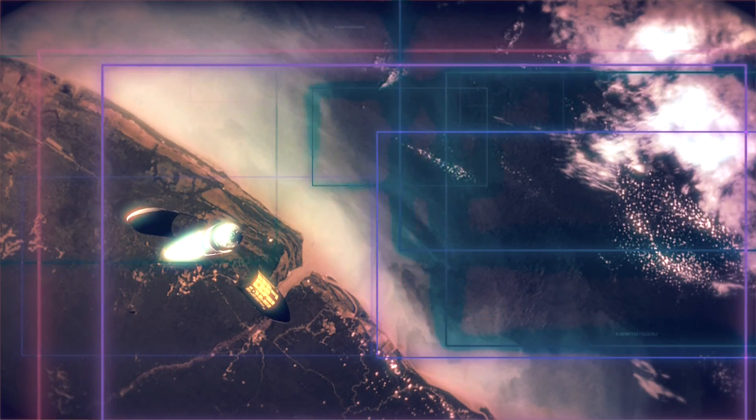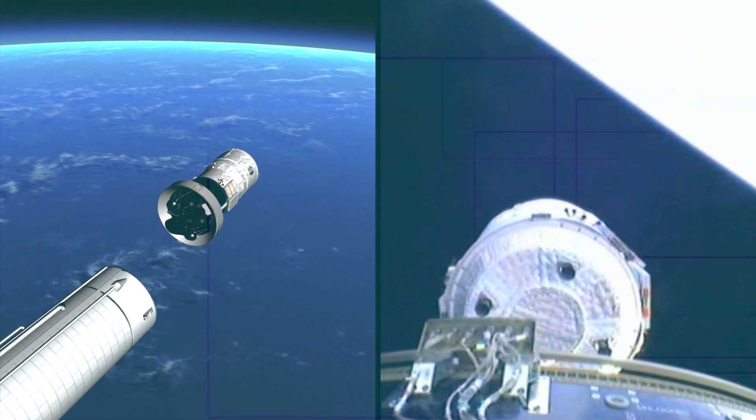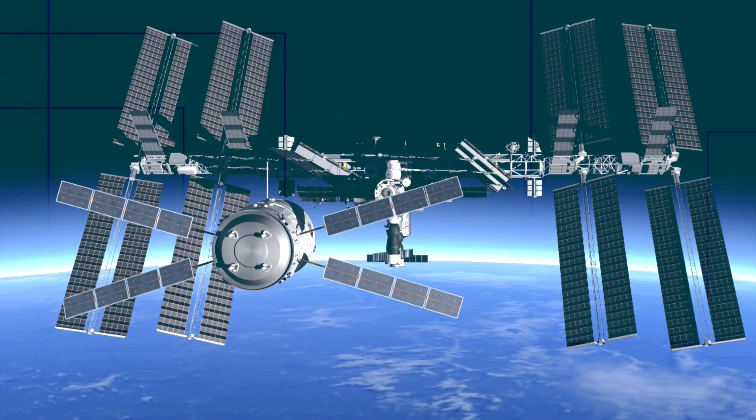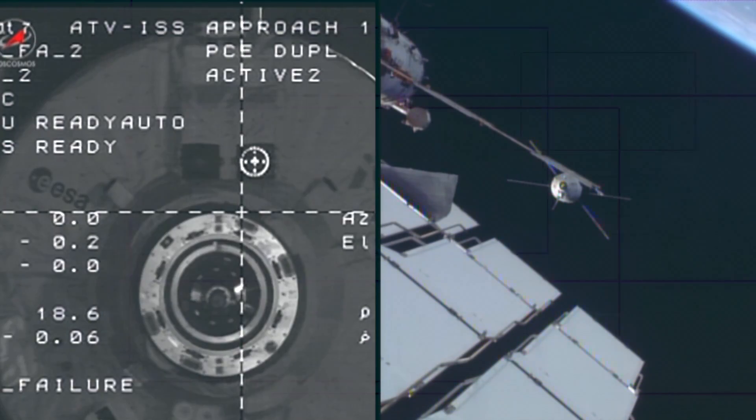The European Space Agency's automated transfer vehicle has a crucial role in maintaining human spaceflight operations on the International Space Station, humanity's permanent outpost in space.